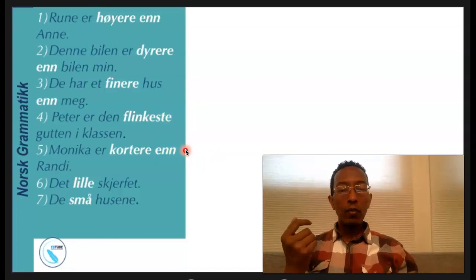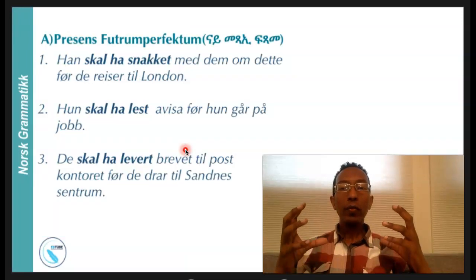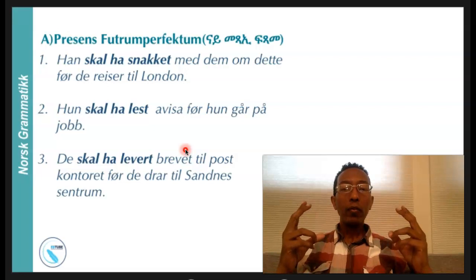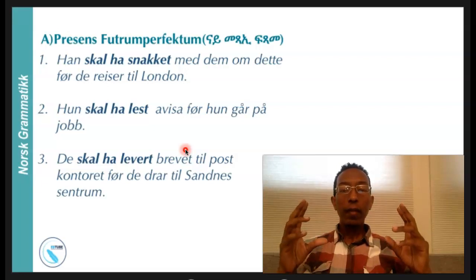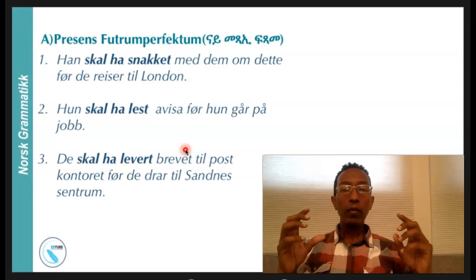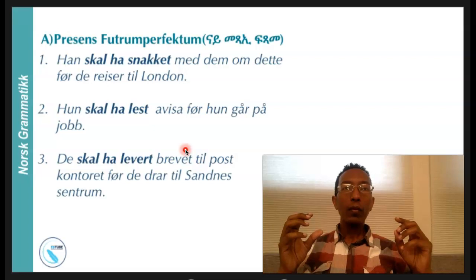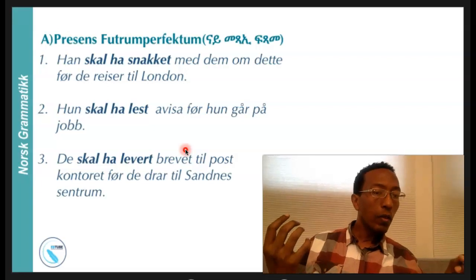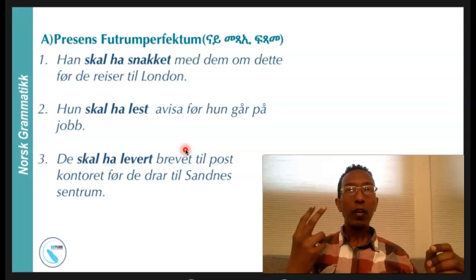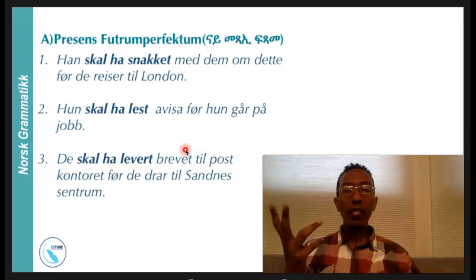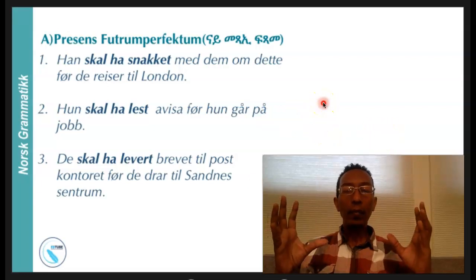Now coming to today's topic — today's topic is all about future perfectum. We are going to categorize this future perfectum, or future perfect, into two: present future perfect and preteritum future perfect. First let's see the usage — when are we going to apply the present future perfectum? We use this present future perfectum to denote an action or event in the future which will be over by the time another action or event occurs. This means there are two actions, but one action has to be finished before the second action happens.